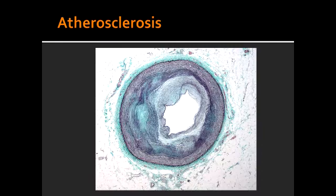How does atherosclerosis lead to ischemic stroke? In atherosclerosis, there is thrombi formation which could lead to ischemic stroke with subsequent necrosis. This can form a cystic cavity with reactive gliosis.